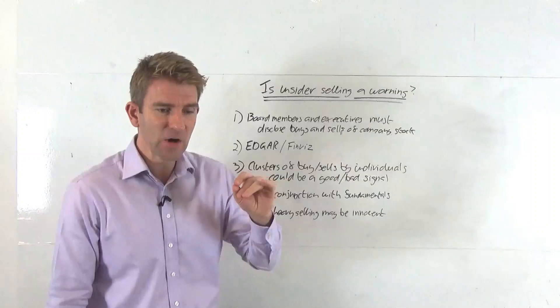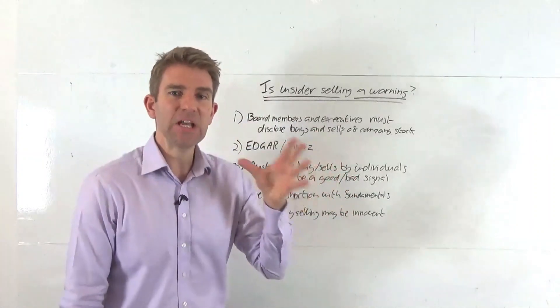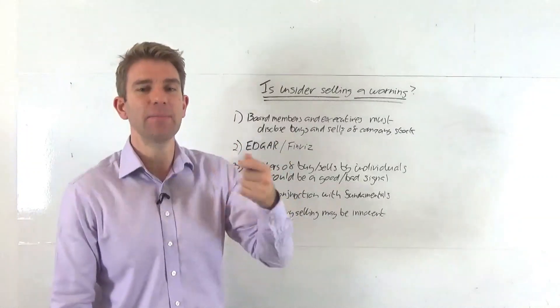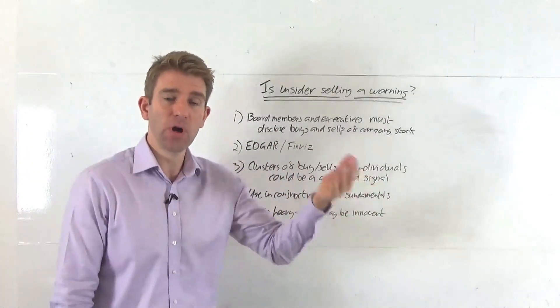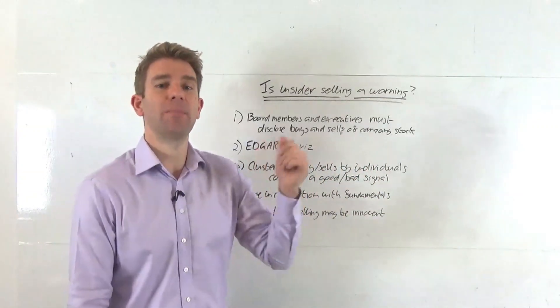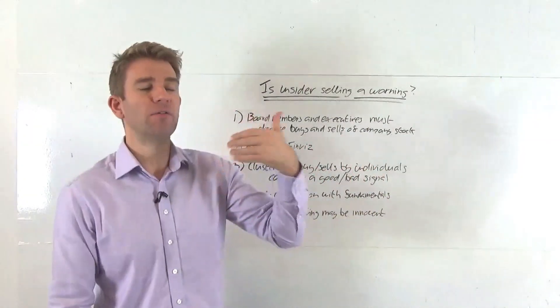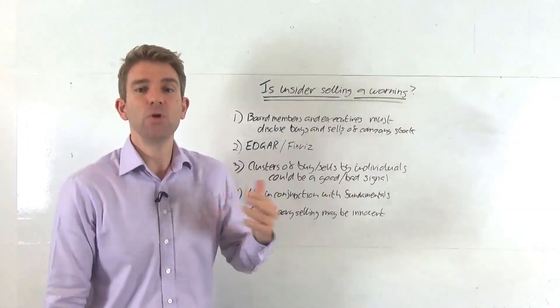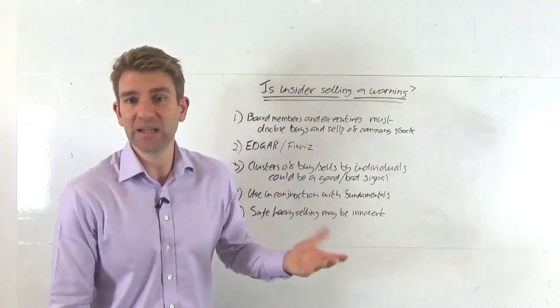Insider dealing is when you've got information that is not public and you're illegally trading based on that information. For example, you're a board member and you know that company is about to be bought out by another company for a 40% premium on the current stock price and you load the boat with stock - that's illegal.